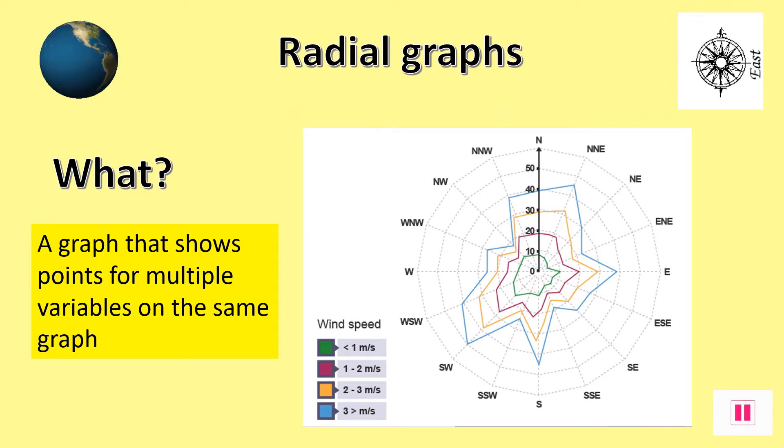Radial graphs are able to show multiple types of data on the same graph. They are generally circular with the axis starting in the very centre.